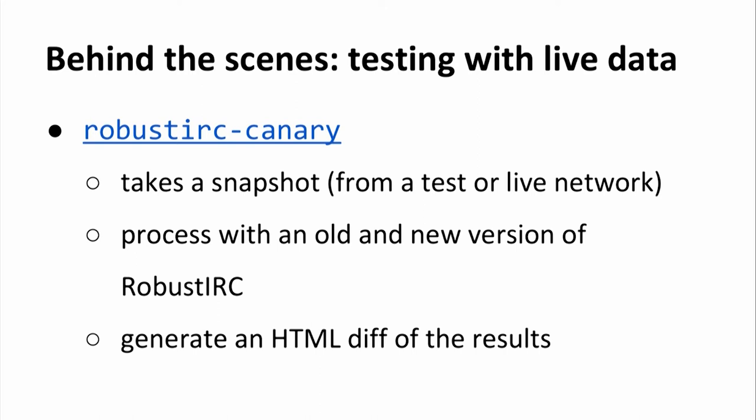When you change the code, you want to verify that your change is correct. One way is to run the unit tests, which we have. But you can go one step further and test with live data. You can either set up a test network, or use a live network, take a snapshot, and run the RobustIRC canary tool. That tool processes the snapshot using the old and new versions of RobustIRC, then generates an HTML diff of the results so you can convince yourself the change has the effects you expect.